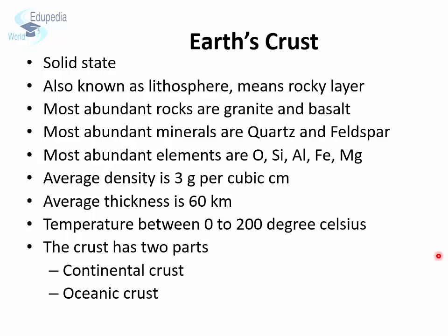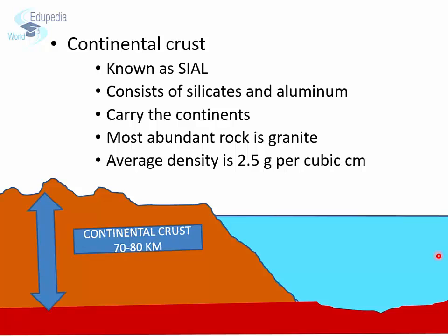The earth's crust has two parts: the continental crust and the oceanic crust. The continental crust is what we live on. It is known as SIAL, as it consists of silicate and aluminum as the most abundant elements. The continental crust carries the continents. The most abundant rock of the continental crust is granite. The average density of the continental crust is 2.5 grams per cubic centimeter, and its thickness ranges between 70 to 80 kilometers on average.